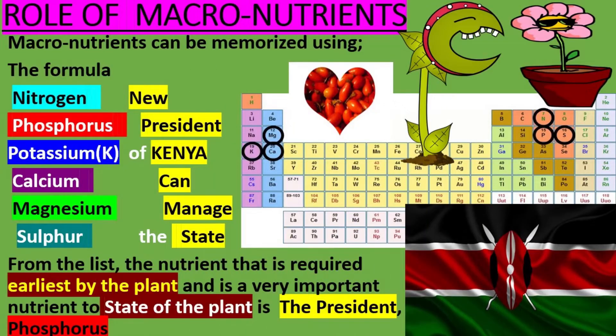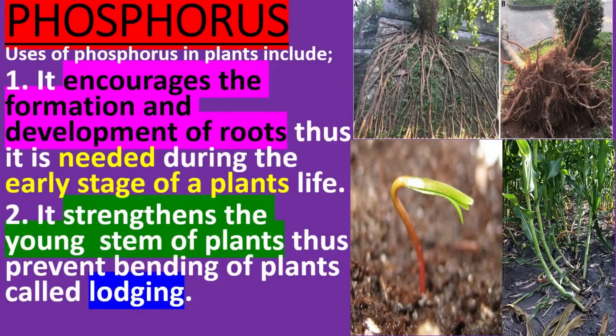The role of macronutrients: macronutrients can be memorized using the mnemonic 'New President Of Kenya Can Manage The State.' From this list, the nutrient that is required earliest by the plant and is a very important nutrient to the state of the plant is the president — phosphorus.